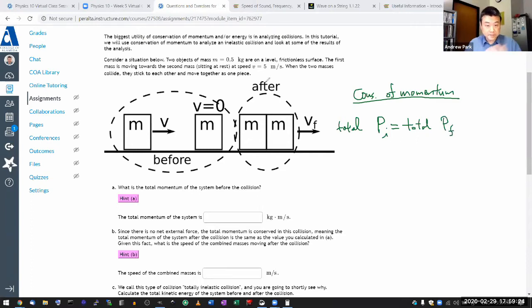So in this scenario, you are given the masses of the objects, and you are given the first mass is moving towards the second mass at this speed. So you are actually given the total initial momentum here through that information.